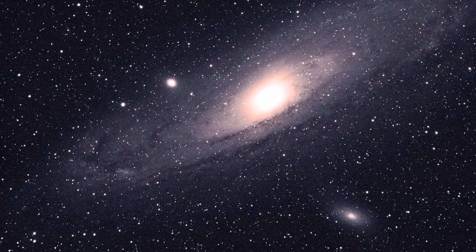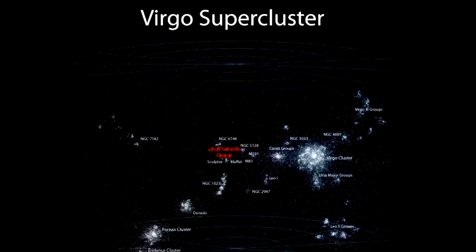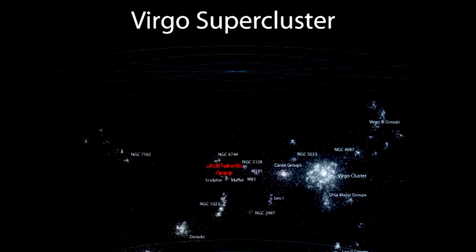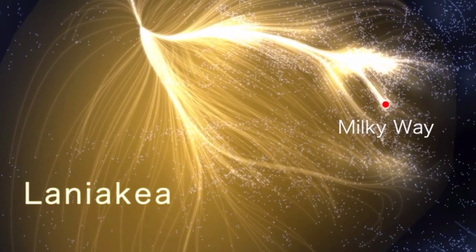which also contains the Andromeda galaxy. This local group is in turn part of a larger cluster of galaxies called the Virgo supercluster, which is in turn itself is a part of a much larger supercluster, the Laniakea supercluster.